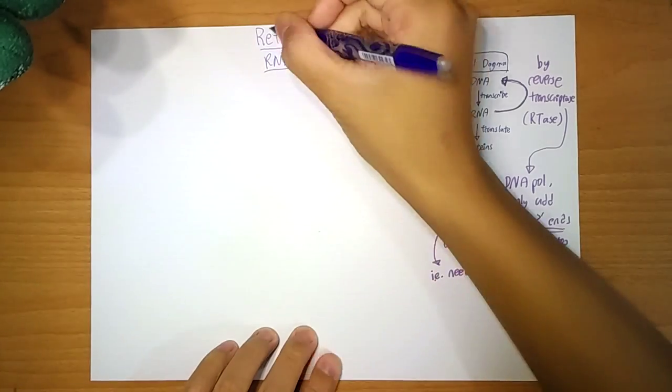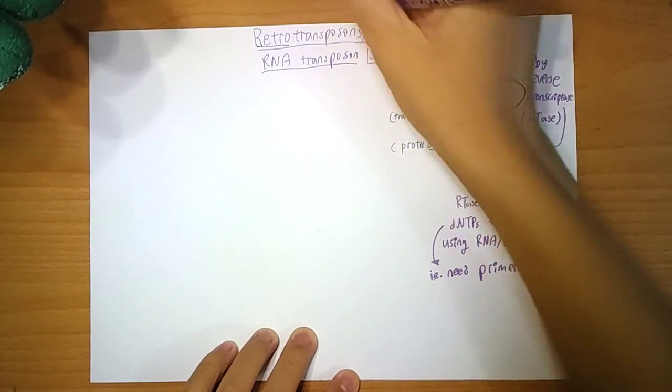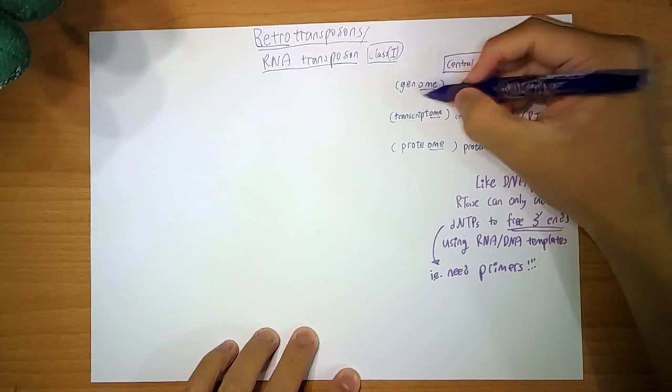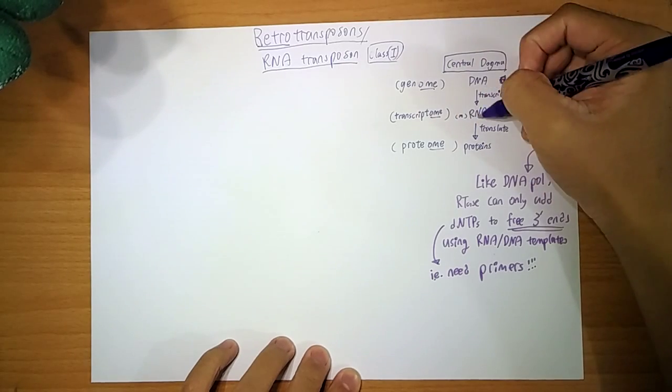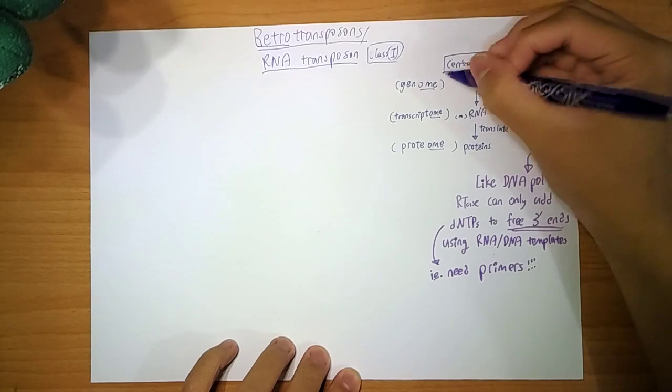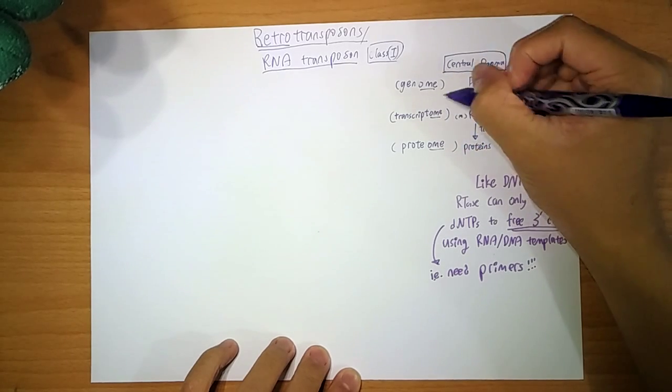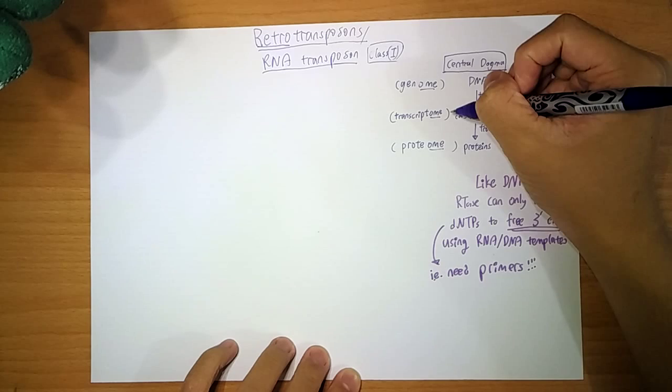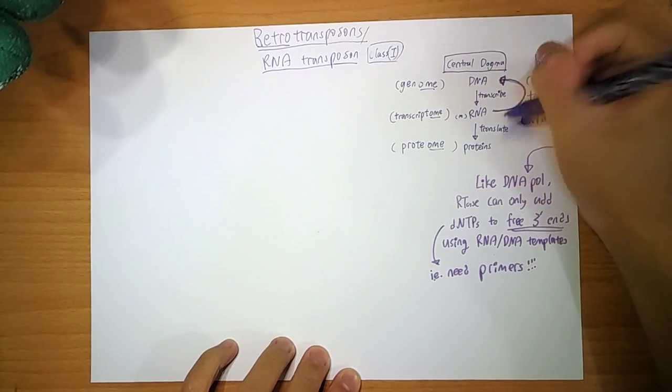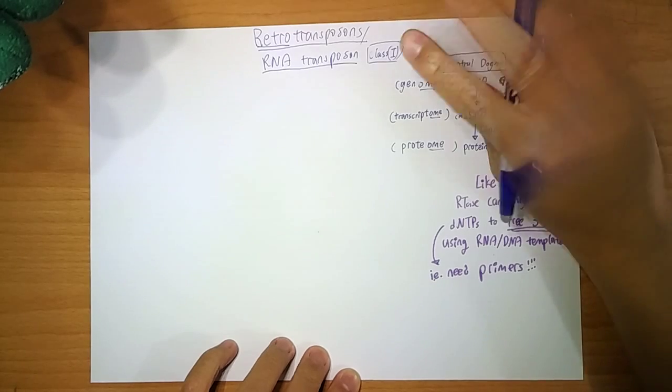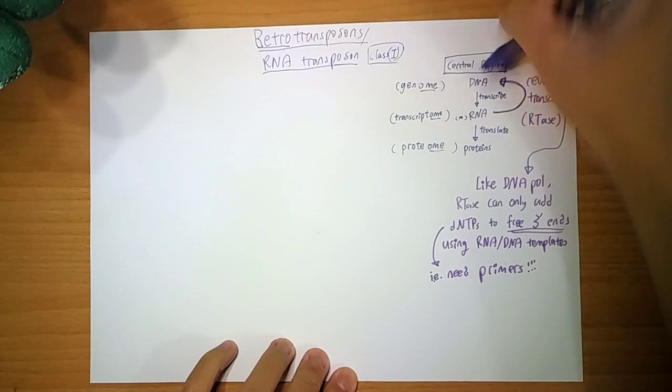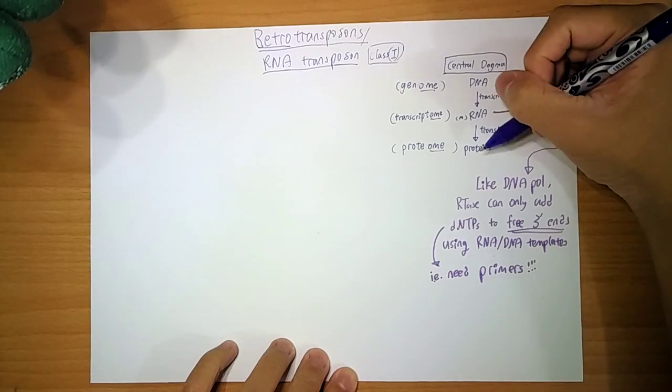Why are they called retrotransposons? Because retro means backwards. So this is a normal flow from your set of genes, from your genomes. You transcribe it, you can splice it, alternate splicing a bit, to make your set of transcriptomes. And then from your transcriptomes, you can make another set of proteins after translating it into a proteome.